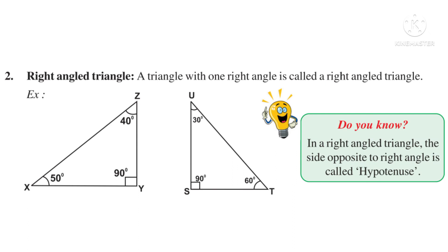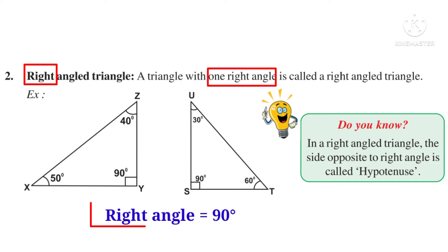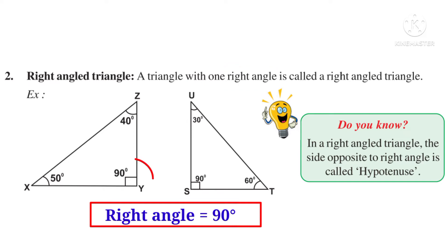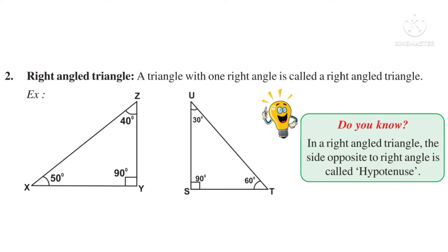Number 2: Right Angled Triangle. Observe — 'right' means one right angle, and one right angle means 90 degrees. So a triangle with one right angle is called a Right Angled Triangle. For example, in triangle XYZ, angle Y = 90° — one right angle — so triangle XYZ is a Right Angled Triangle. In triangle UST, angle S = 90° — one right angle — so triangle UST is also a Right Angled Triangle.